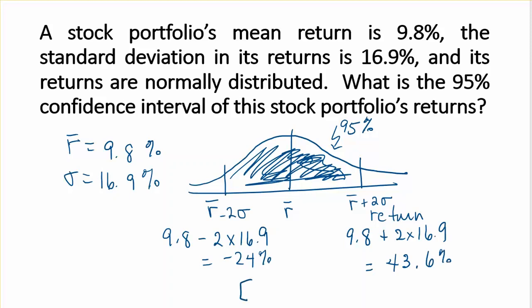So the 95% confidence interval goes from negative 24% to positive 43.6%, which means that there's a 95% chance that returns will be in this range.